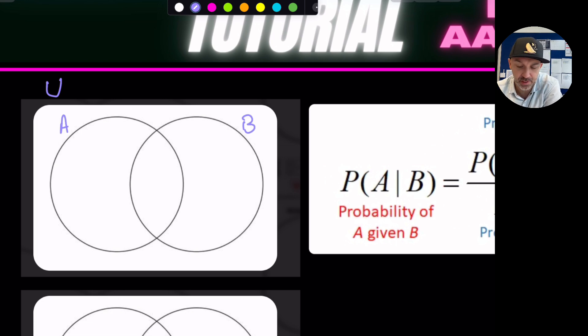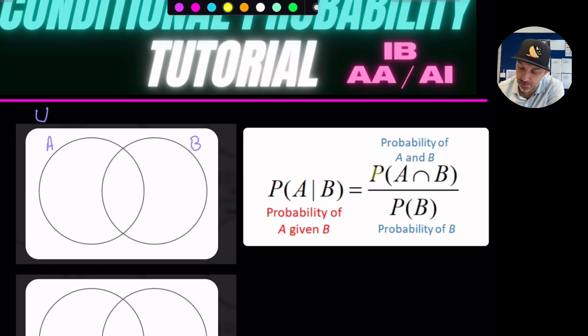They are not mutually exclusive otherwise these circles wouldn't overlap. So that means that the events can happen at the same time. And so there was an overlap in the middle. So just to be absolutely clear looking at the probability formula this A and B which I'm just going to sort of circle here